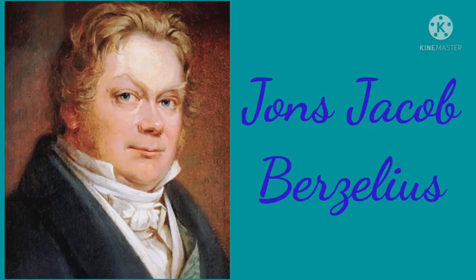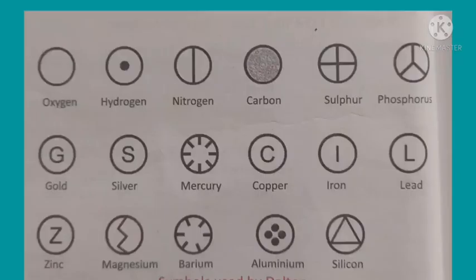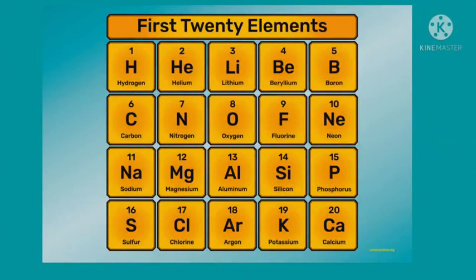Remember students, the symbols used today were suggested by a Swedish chemist known as Jöns Jacob Berzelius. He suggested that instead of using pictorial symbols, letters of the English alphabet should be used to represent elements.